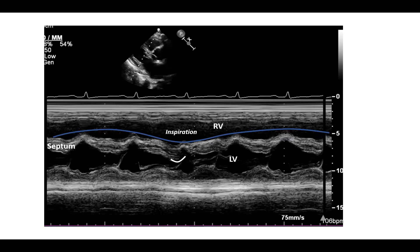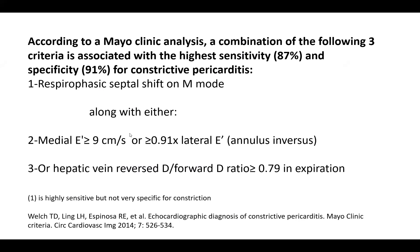Those are the three echo criteria you need to know — the most specific ones. If you have two out of the three, you've made the diagnosis of constrictive pericarditis by echo. One: respiratory septal shift on M-mode, which includes septal variation and septal shuddering. Two: hepatic vein D reversal ratio over 0.79 in expiration. Three: E prime annulus inversus — medial E prime over 9 cm/s or bigger than lateral E prime.